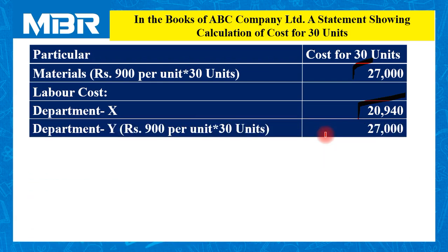Department Y is capital intensive, fully mechanized, and based on automatic machines. So the effect of the learning curve is not applicable to Department Y and no special calculation is required. Simply refer to the question: the cost of labor for Department Y per unit is Rs. 900, or 150 hours multiplied by Rs. 6, multiplied by 30 units equals Rs. 27,000.